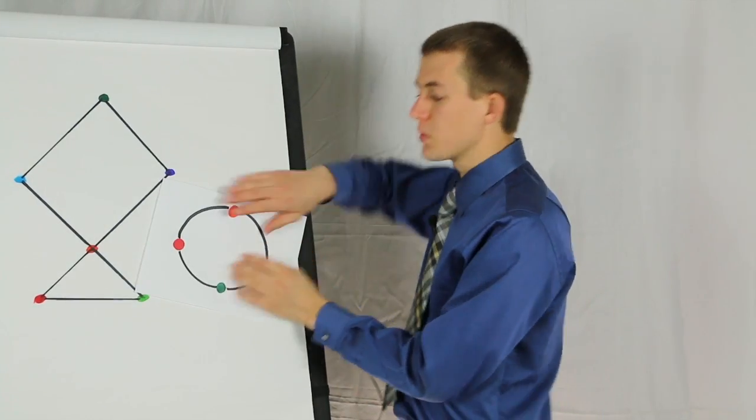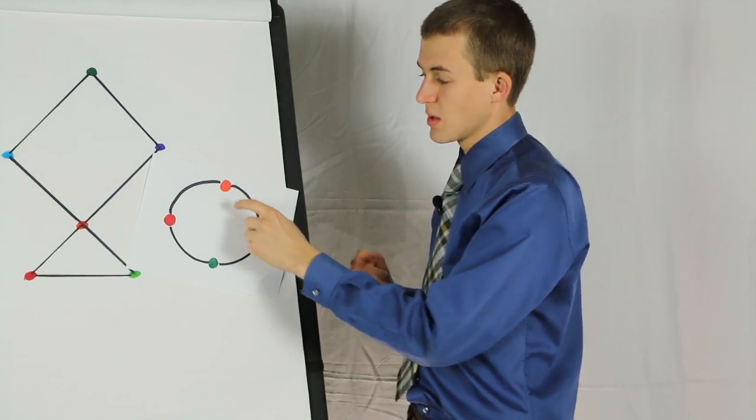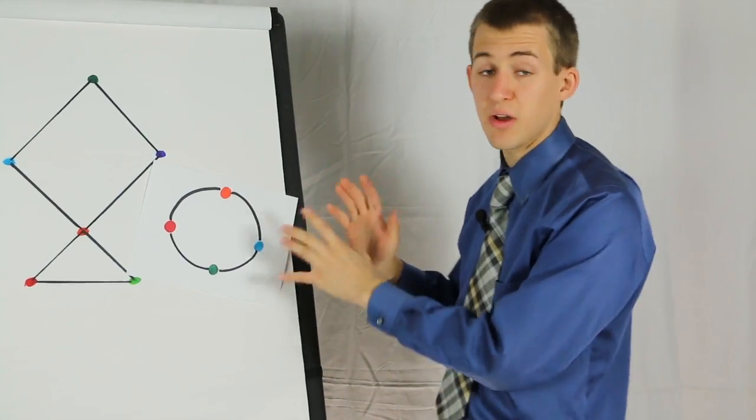Here's an example of a very simple Hamiltonian path. It's a circle, and we pass through each node once. Anything more complex than this gets very hard.